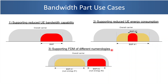The next use case is supporting different numerologies. In one BWP there can be numerology 1 and in another BWP there can be numerology 2. This is required because component carriers have different frequency bands, and different frequency bands are better utilized with different numerologies.